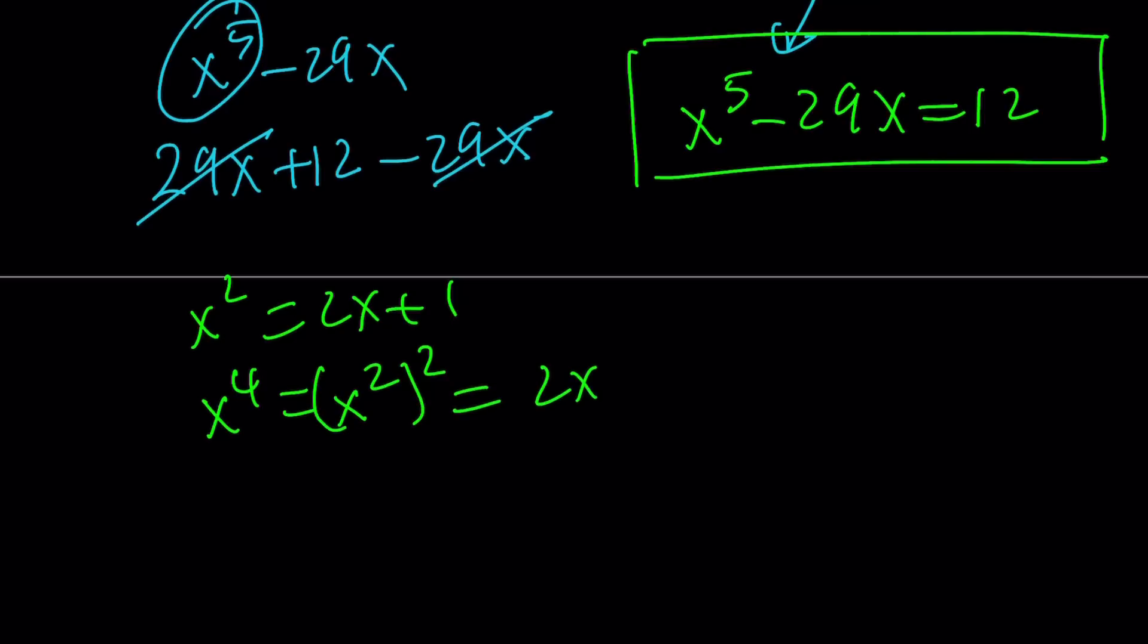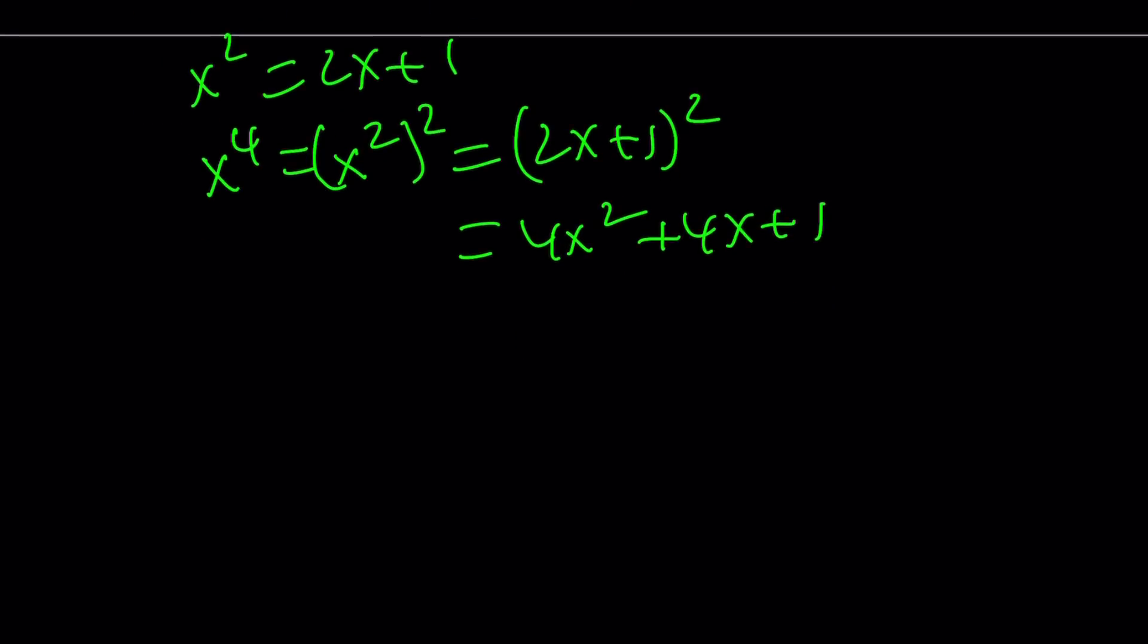So x^4 is going to be (x^2)^2, which is (2x + 1)^2. And that will be 4x^2 + 4x + 1. And now you can replace x^2 with 2x + 1 again. 4(2x + 1) + 4x + 1. This is going to give you 12x + 5.